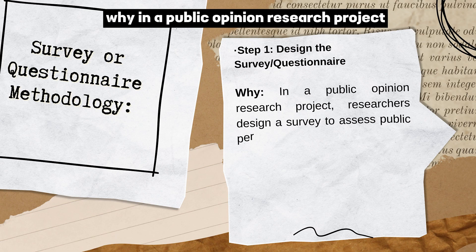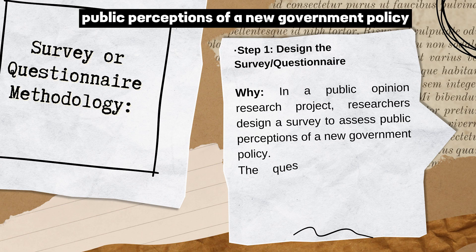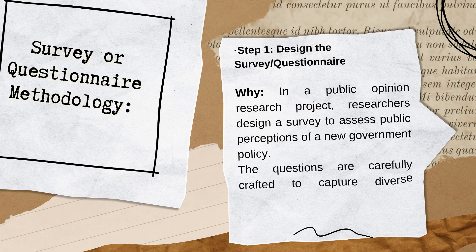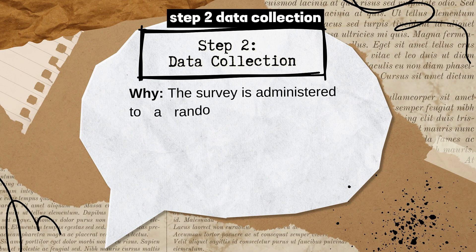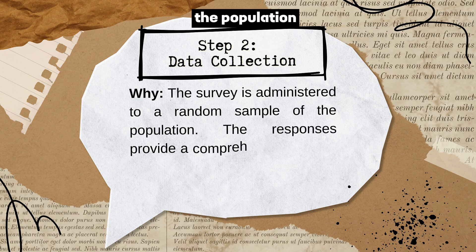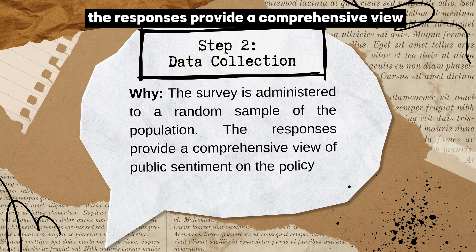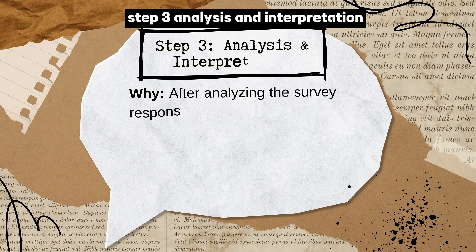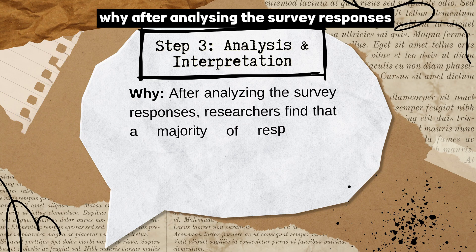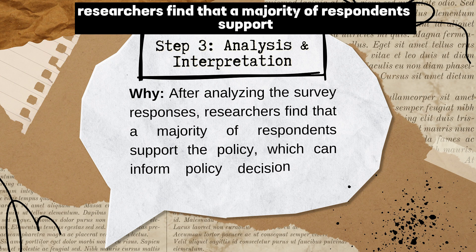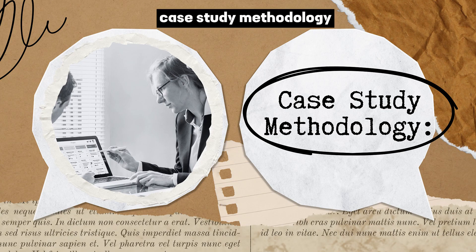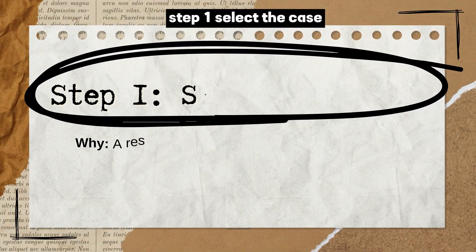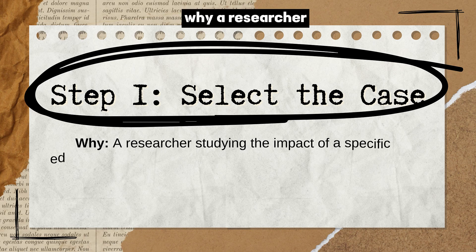Survey or Questionnaire Methodology — Step 1: Design the Survey. In a public opinion research project, researchers design a survey to assess public perceptions of a new government policy. The questions are carefully crafted to capture diverse opinions. Step 2: Data Collection. The survey is administered to a random sample of the population, and the responses provide a comprehensive view of public sentiment. Step 3: Analysis. Researchers find that a majority of respondents support the policy, which can inform policy decisions and political strategies.